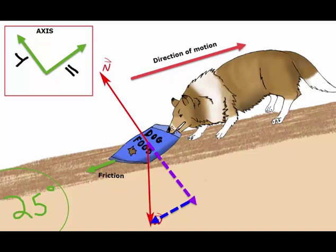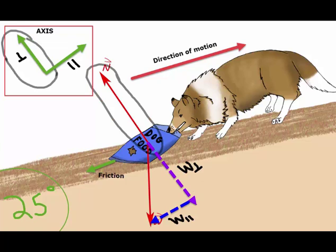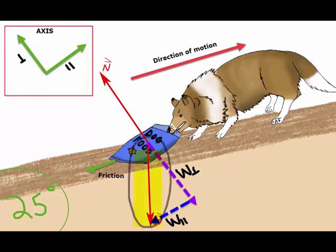As you can see, the normal force has no components because it is already perpendicular to the slope. But weight W has one component in the parallel and one in the perpendicular direction. Since the vector is not aligned along the parallel or perpendicular axis, we need to split it into its components.